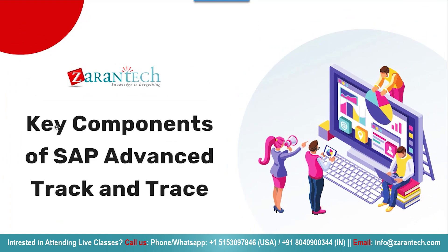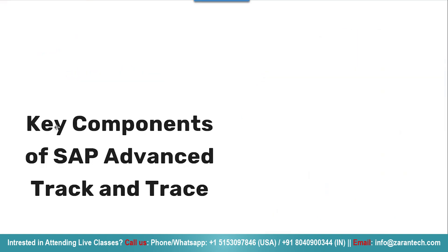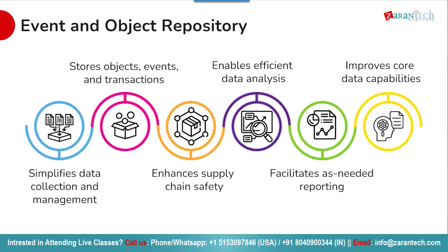Now we will look into the key components of SAP Advanced Track and Trace. These include the event and object repository, serial number management, reporting and analytics, master data management, and data integration. Let us dive into each one. The first is the event and object repository — a centralized database that stores all key data and events related to pharmaceutical products as they move through the supply chain.